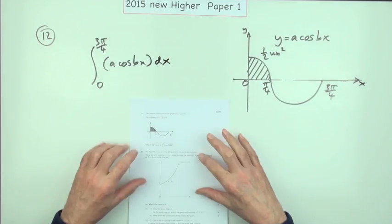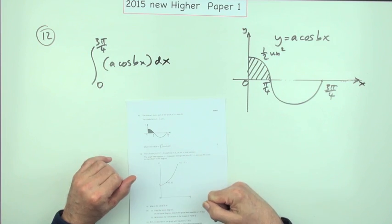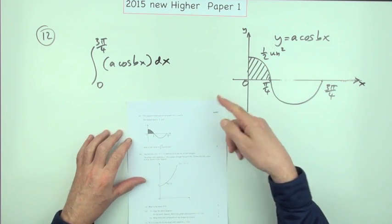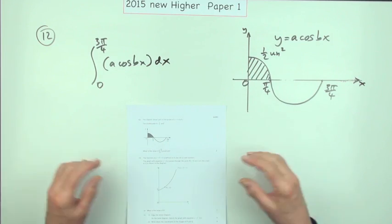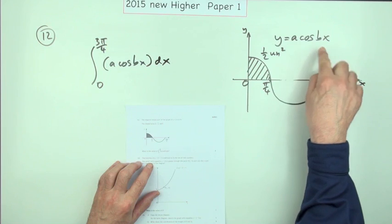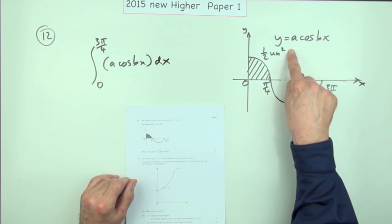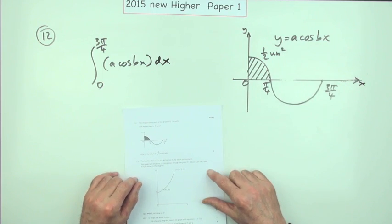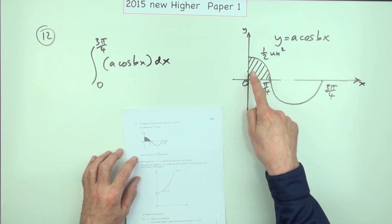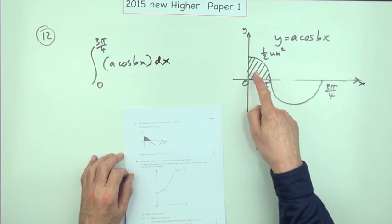Number 12, then, from the 2015 new Higher Paper 1. Just a little two-mark question really. It shows you this, but it's not actually asking you for the value of those parameters in that equation - what a and b are. It just says if in this graph that shaded area is half a square unit, what is...